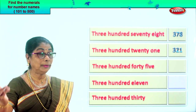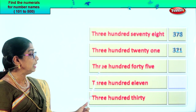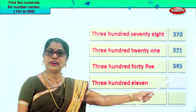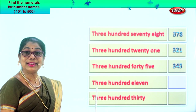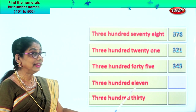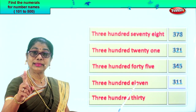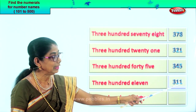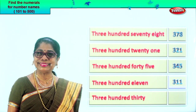Three in the hundreds place, four in the tens place, five in the ones place — three, four, five. Three hundred forty-five. Good. Let's take the next number name: three hundred eleven. Three in the hundreds place, one in the tens place, one in the ones place. Three hundred eleven.